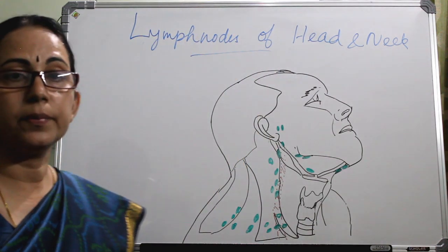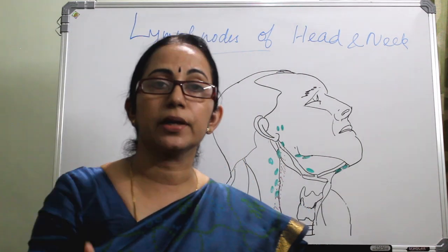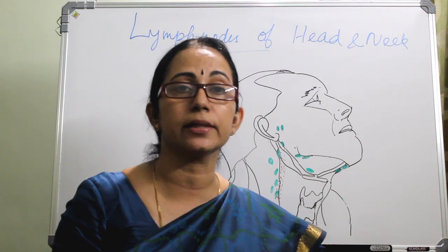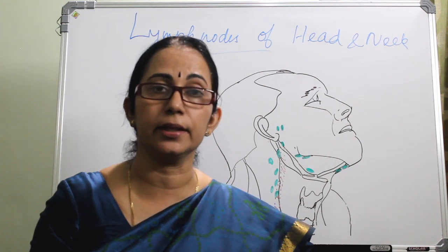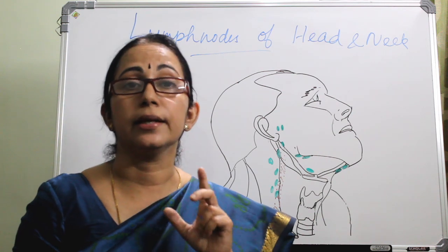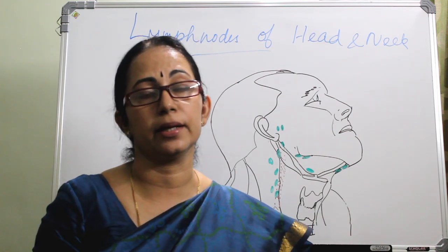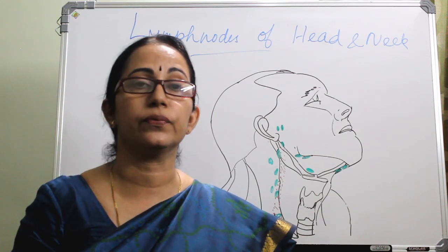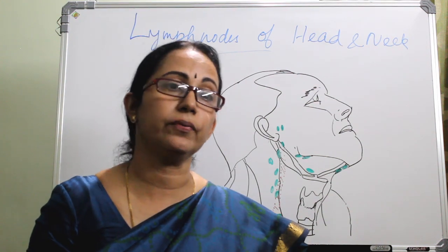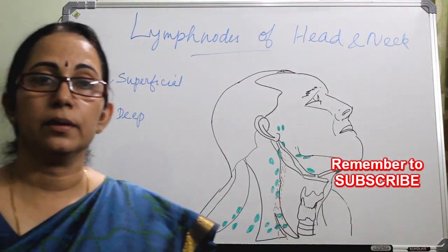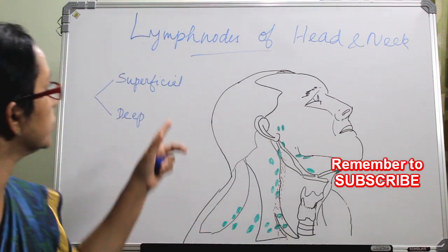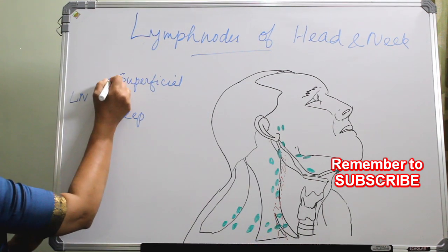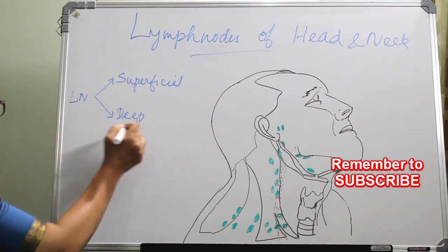I will be explaining about the different groups of lymph nodes — superficial and deep — and also the Waldeyer's ring, the outer ring and the inner ring, and also the levels of lymph nodes in the head and neck area and the efferent or draining area of each group. Broadly, the lymph nodes of the head and neck area are divided into superficial and deep.